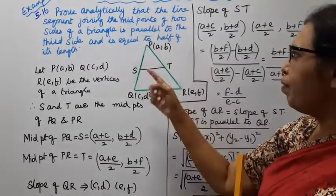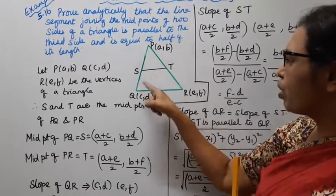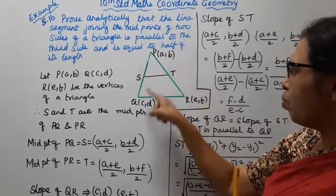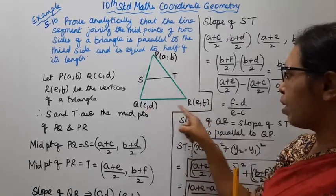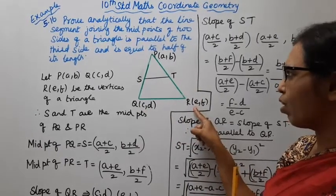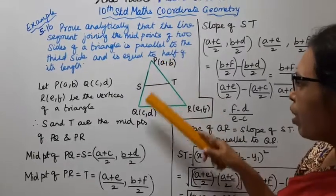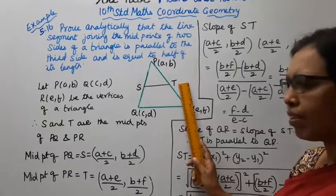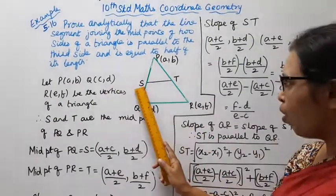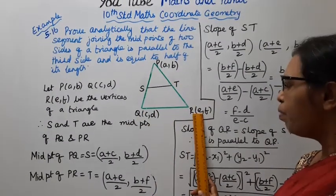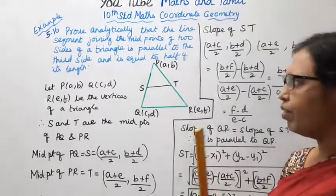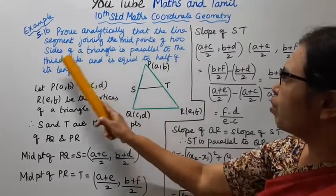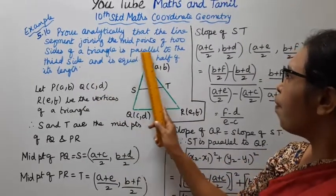Looking at the problem: PQ has midpoint S, and PR has midpoint T. The midpoints of two sides of the triangle — S on PQ and T on PR — and we need to show ST is parallel to the third side QR of the triangle.